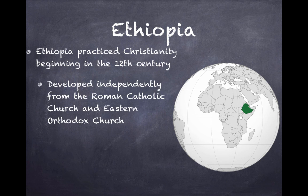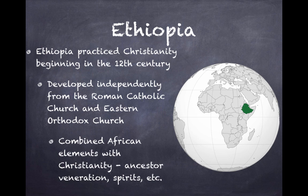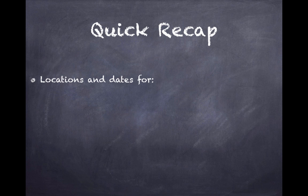Now focusing on Ethiopia in East Africa: they practiced Christianity beginning in the 12th century. However, they developed independently from the Roman Catholic Church and the Eastern Orthodox Church due to their distance from Europe, allowing them to have a unique style of Christianity. They combined African elements with Christianity, including ancestor veneration and worshiping the spirits.